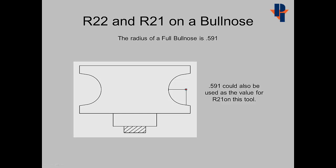The 0.591 value can be important on a bullnose. It can be used to calculate R22, and it can also be the value used for R21.